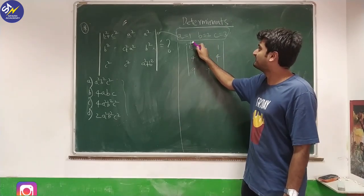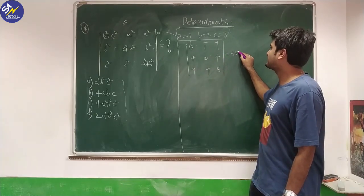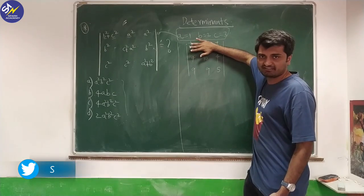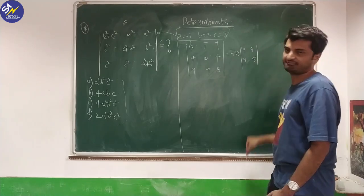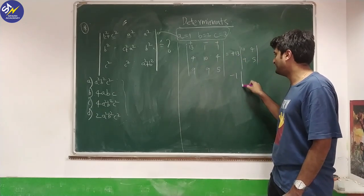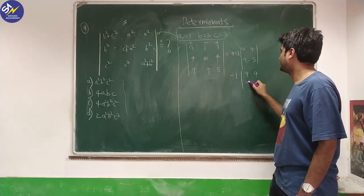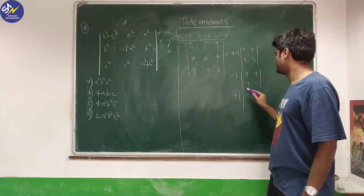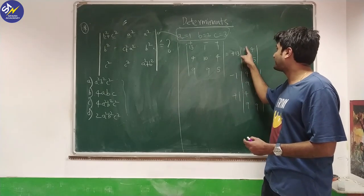For a 3×3 determinant we apply the plus-minus-plus sign pattern. Taking the first element, I cover its corresponding row and column to get the 2×2 minor with elements 10, 4, 9, 5. For the second term, I cover the corresponding row and column to get 4, 4, 9, 5. Then similarly for the third element.